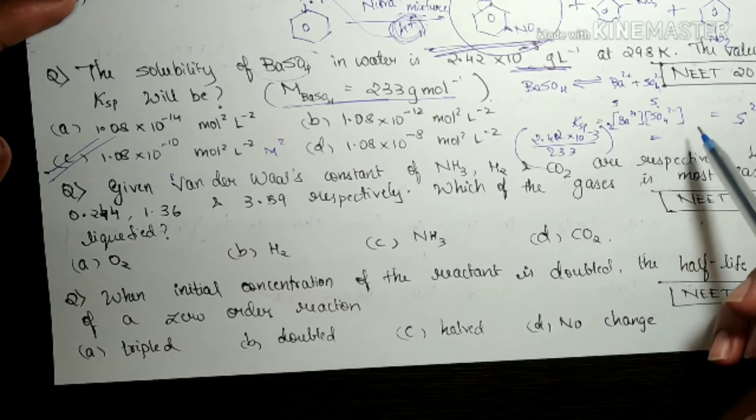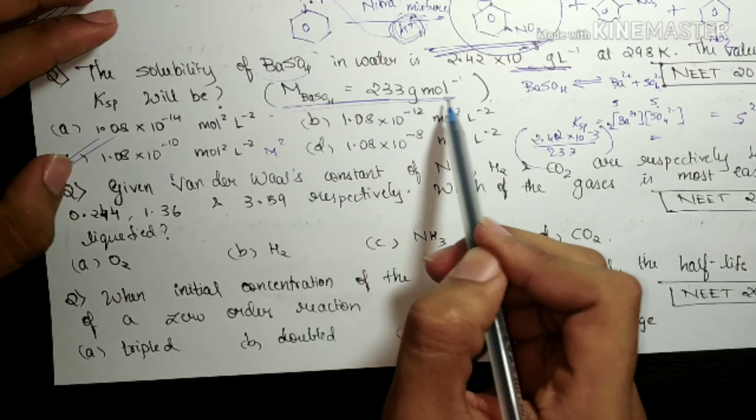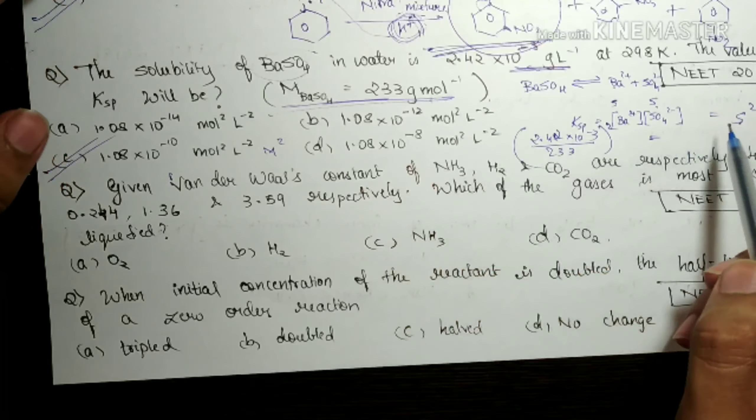I hope you got what we have done. If you forget to see that you have to divide by molecular mass, what you can do is, you know that S is given in grams per liter and you want the answer as S square. So S square will become gram square per liter square. But all the options are in mol square per liter square. So in that way, at least you have to get the idea that you have to divide by molecular mass so as to get moles in the units.